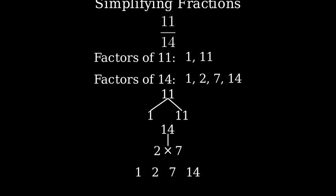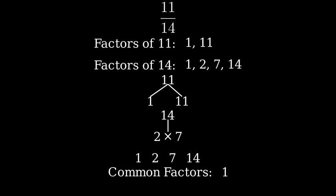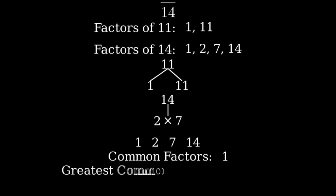Now that we have all the factors, let's find the greatest common factor. Looking at both sets of factors, we can see that 1 is the only number that appears in both lists. This means that 1 is the greatest common factor of 11 and 14.